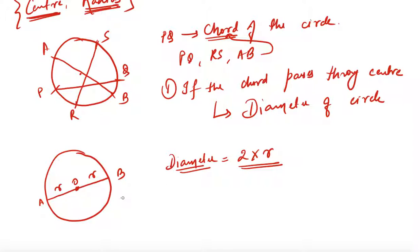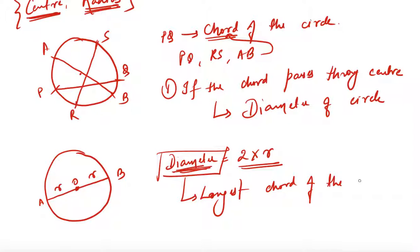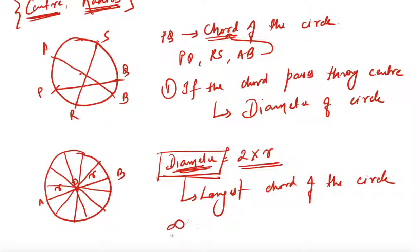So far we have studied how to define a circle, its radius, its center, and what the diameter is. The diameter is nothing but the longest chord of the circle. If I ask how many diameters can be drawn in a circle — I can draw one here, another here, another here, and so on. In a circle, we can draw infinite number of diameters. The only condition is that the line must pass through the center.